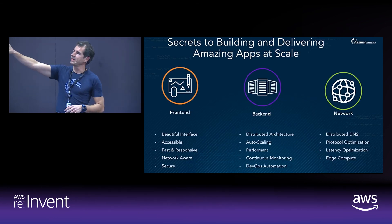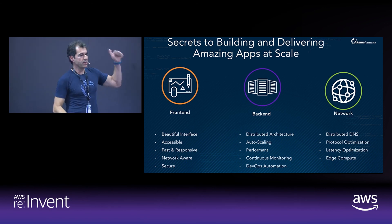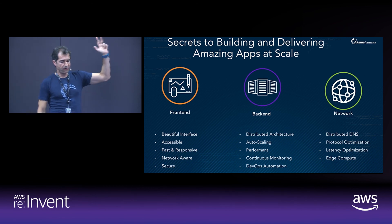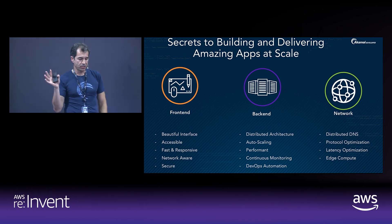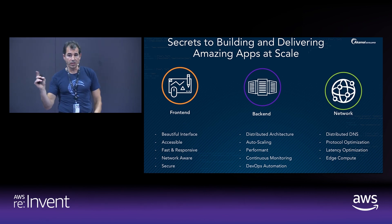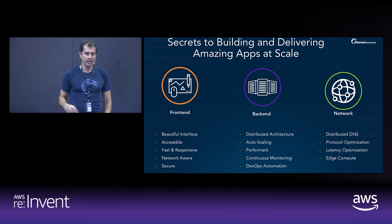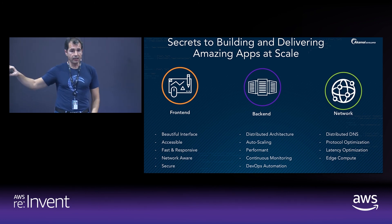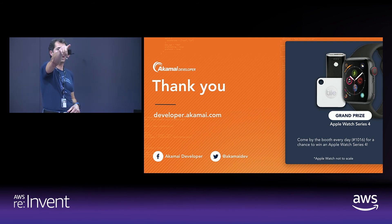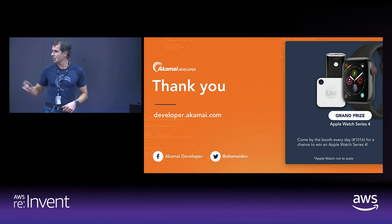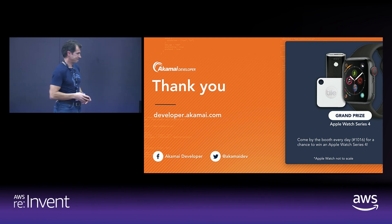To summarize the secrets to building and delivering amazing apps at scale: optimize on the front end, back end, and network. On the front end: start with a beautiful interface that is accessible, fast and responsive, network-aware, and secure. On the back end: use a distributed architecture that auto scales, performs well, and is continuously monitored using DevOps best practices. On the network: ensure a distributed DNS, optimize the protocol and latency, and if you can, use edge compute. Come visit us at booth 1016 — we have a raffle for an Apple Watch Series 4 every day at 4. Thank you.